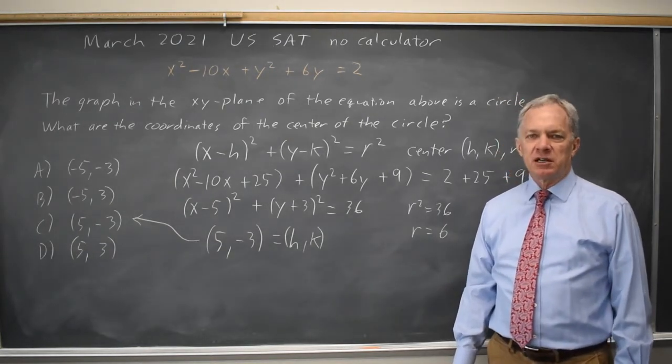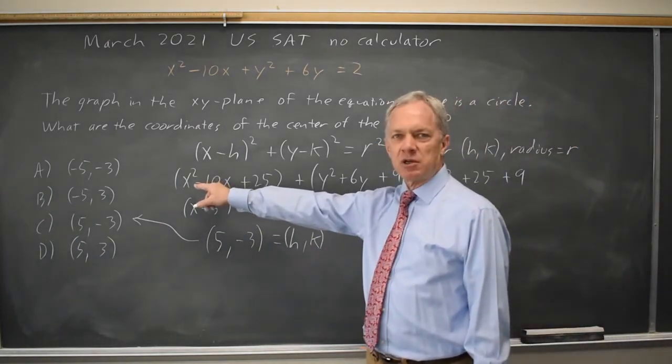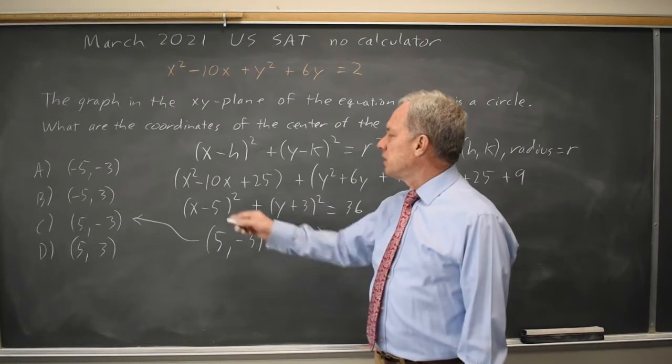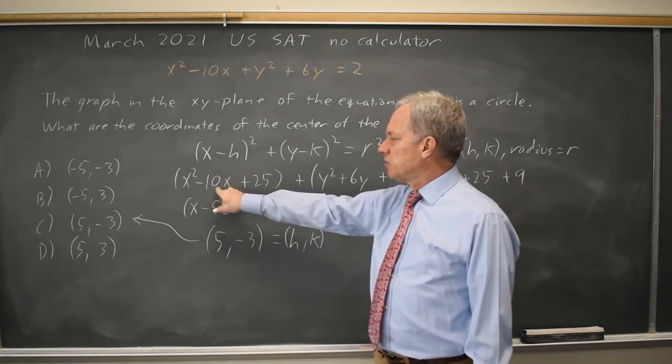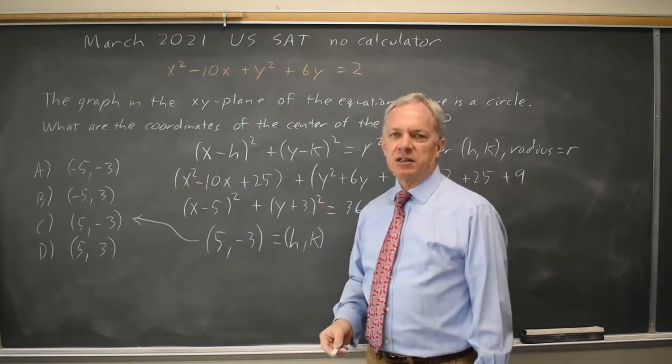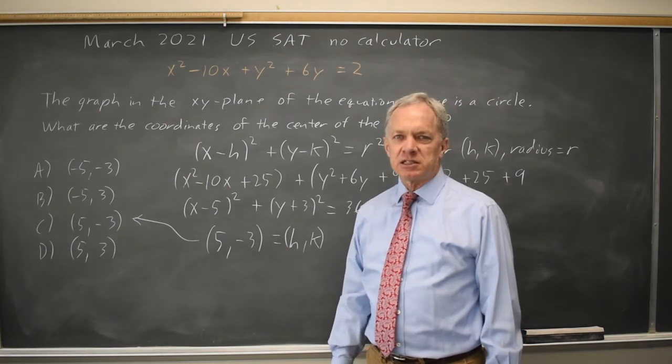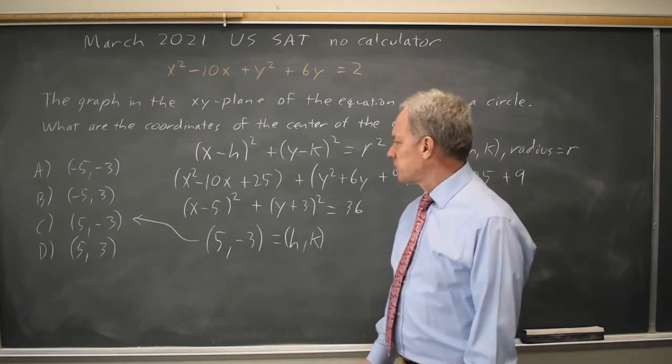In the event that we had a leading coefficient for the x² and y² that was not 1, we would take the linear coefficient over the quadratic coefficient, half of that and then square it. But College Board has never done that on the SAT so I'm not going to worry about it much on this video.